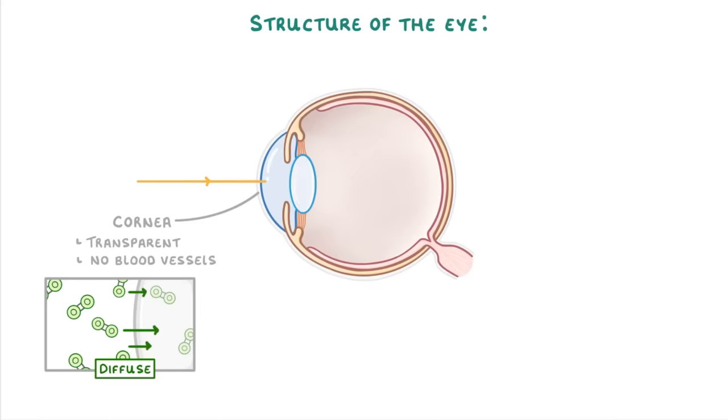The reason we need the cornea is because it causes all the light that passes through it to refract or bend by a certain amount.